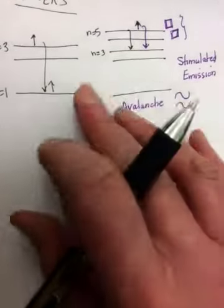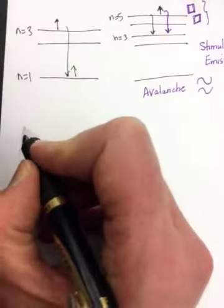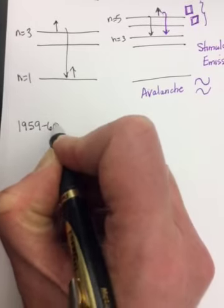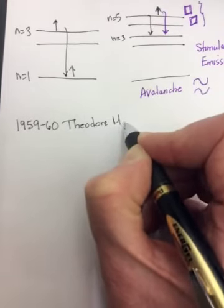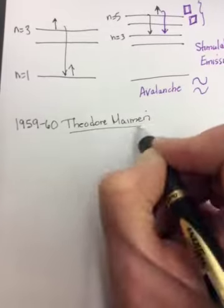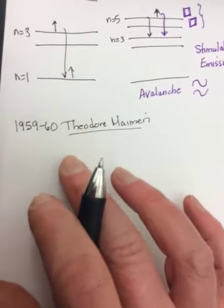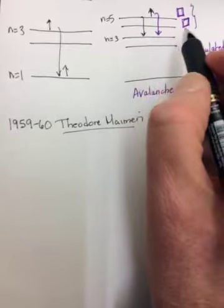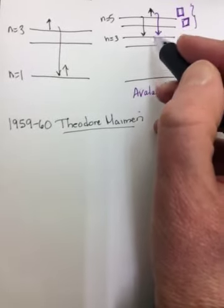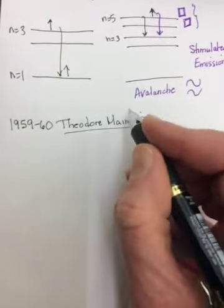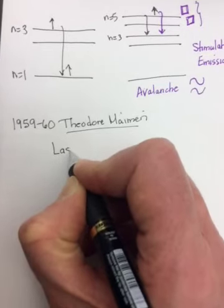So Einstein came up with the theory of how this could work in 1917. 1959 to 1960, a physicist named Theodore Maiman is the one that gets credit for a device meeting those two conditions that Einstein said were necessary. One was that the atom was in the excited state, and the other was that you could somehow collect and contain the photons being emitted so they could continue to strike more excited atoms. Theodore Maiman was able to create a device meeting both of these requirements, and he called it a laser.